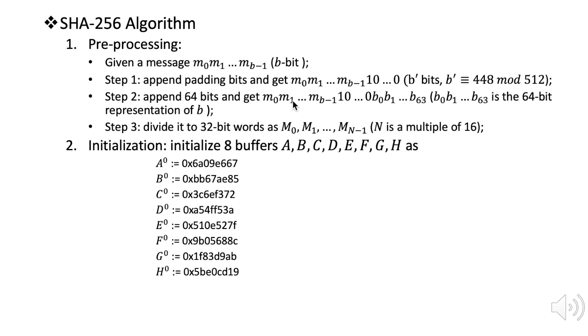Now we have the message here and we're going to divide it into 32-bit words, denoted as M0, M1, until M(N-1). The capital N here is a multiple of 16, so we're going to process the message each time for 16 words.